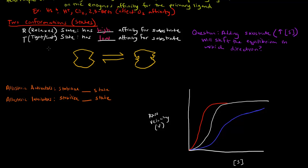Let's use this example here. If we think about this being a particular allosteric enzyme, it can exist in this conformation, or its structure will slightly change — I've made it look really exaggerated here. If I think about these two portions as being active sites on two different polypeptides that are part of this protein, this here is the active site in the relaxed state, or R state, and this here represents the active site in the T state.